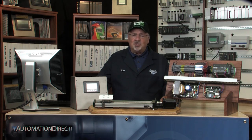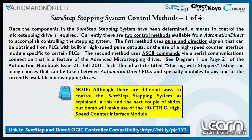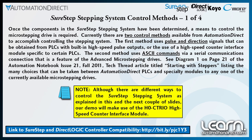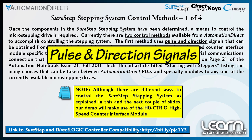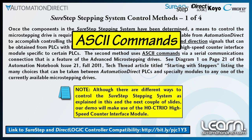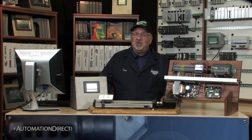Once I determined the particular SureStep components I would need in my motion control demonstration, I next had to decide on how I wanted to control the stepping system. There are currently two methods available for controlling the stepping system. The first method uses pulse and direction signals, which can be obtained from AutomationDirect's PLCs with built-in high speed pulse outputs or by using a high speed counter interface module that works with certain PLCs. The second method uses ASCII commands by way of a serial communications connection, which is a feature of the advanced micro-stepping drives.